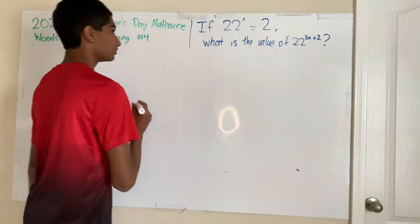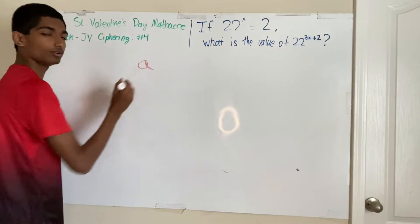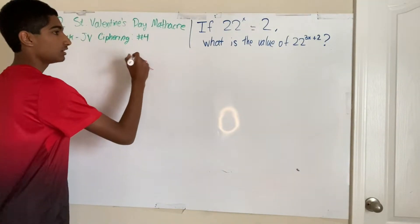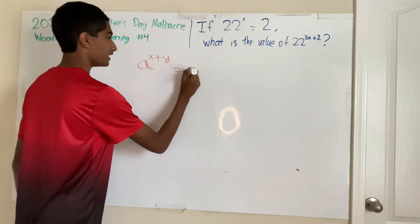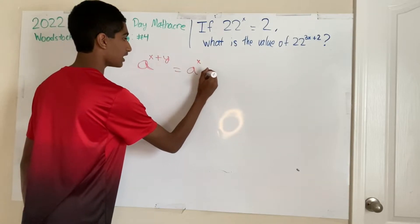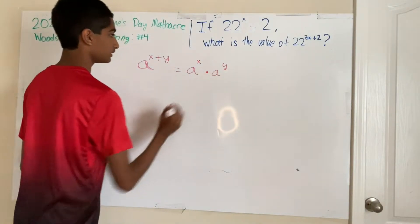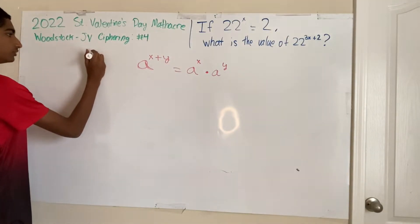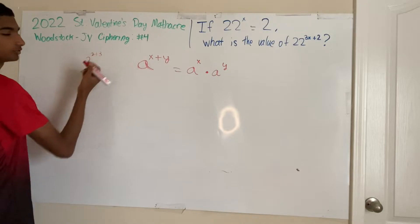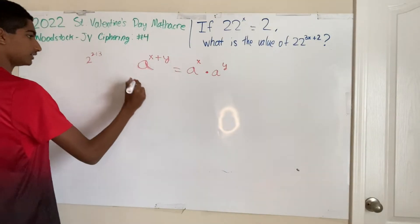So basic exponent rules state that a, which can be any constant, to the power of x plus y is equal to a to the x times a to the y. And x and y can be any number as well. You can try this out with 2 to the power of 2 plus 3 for instance. And let's keep going.